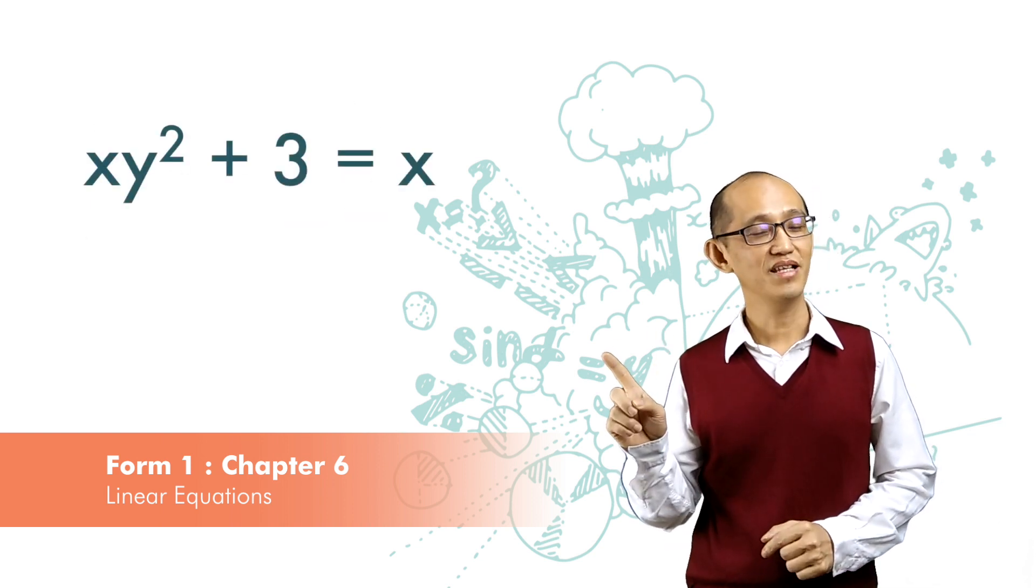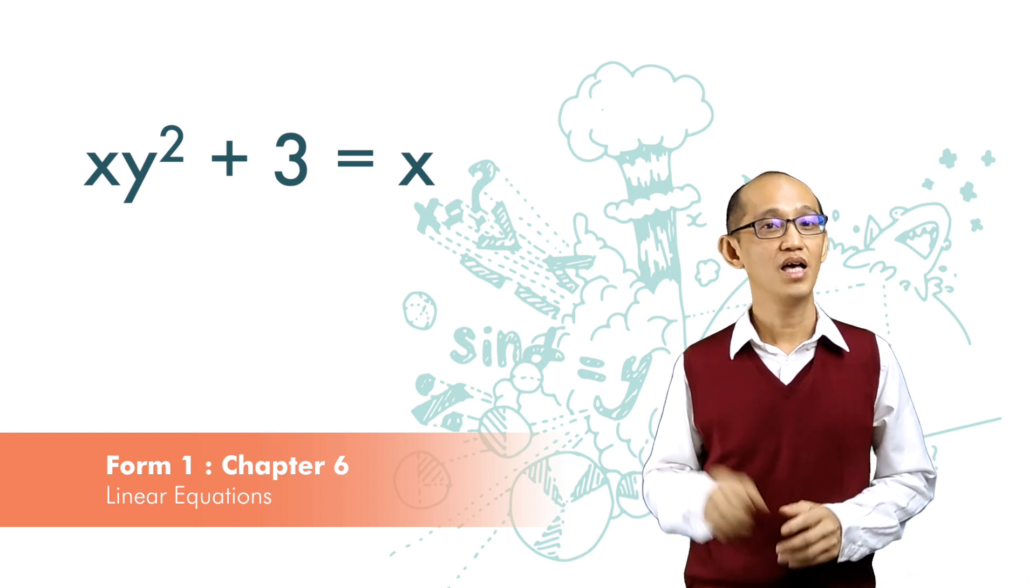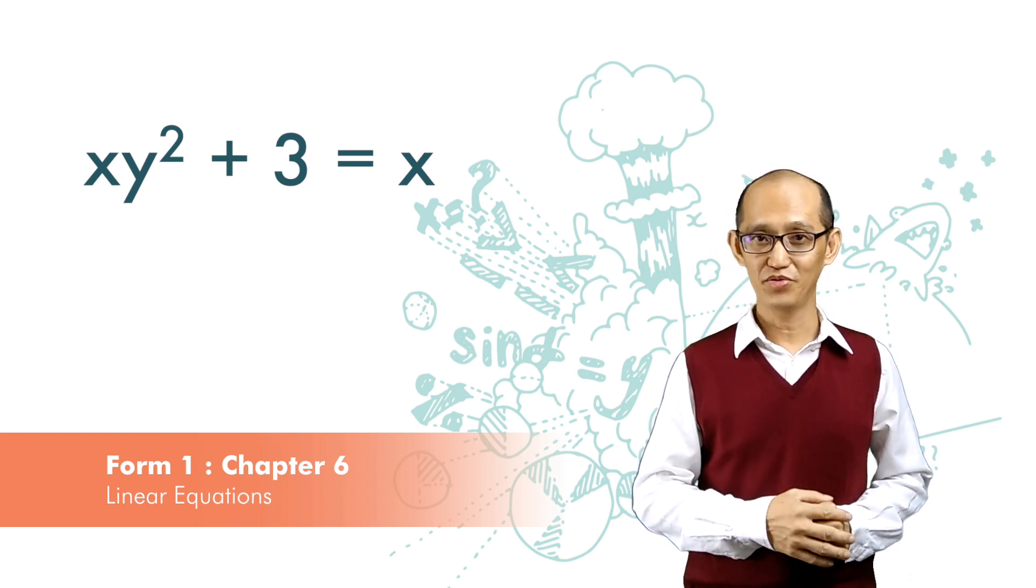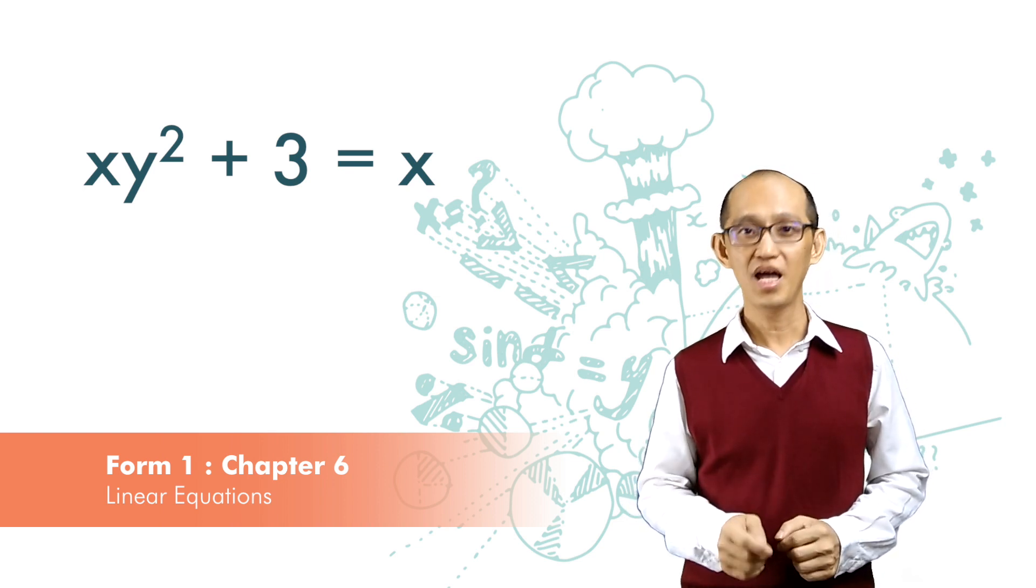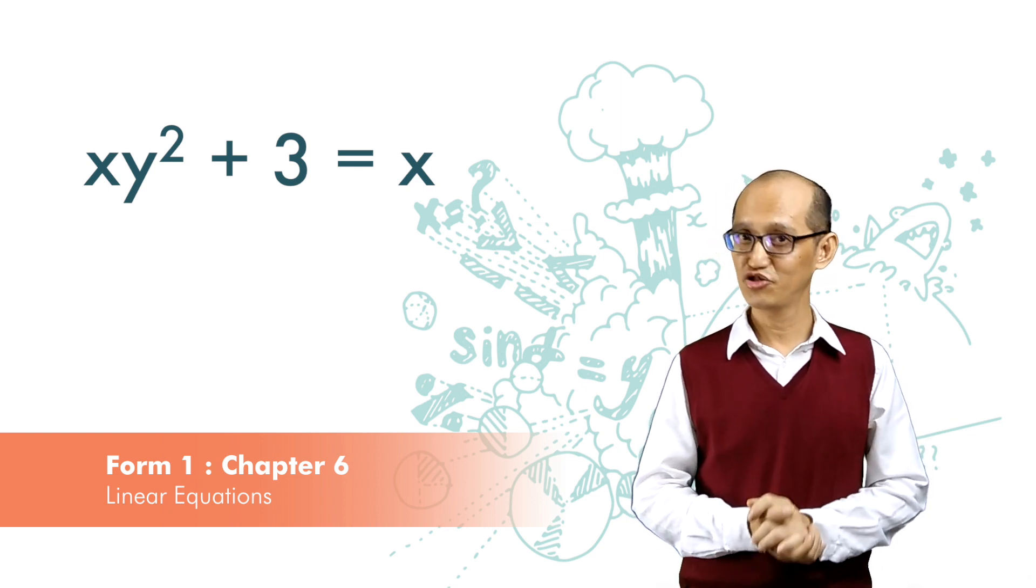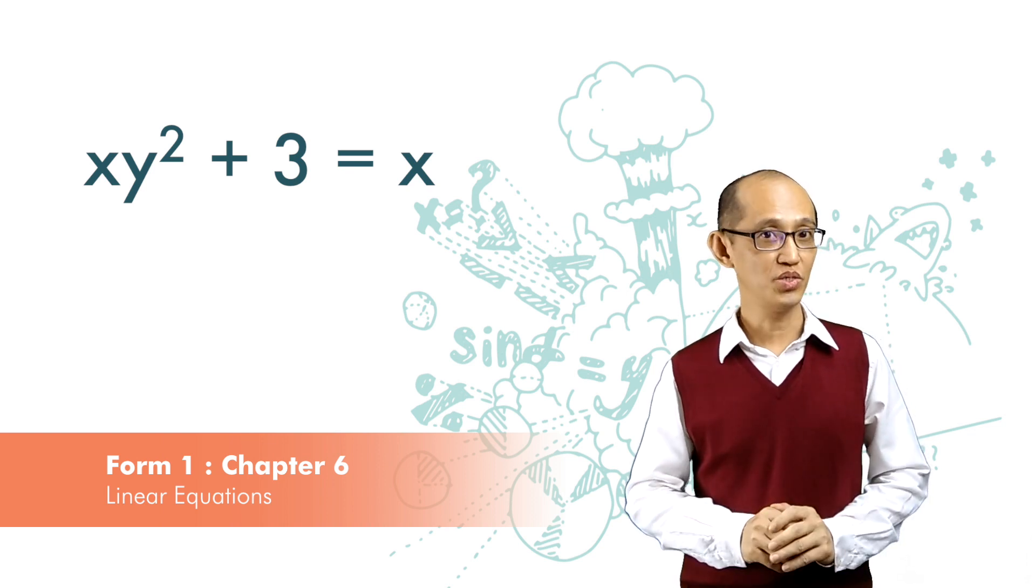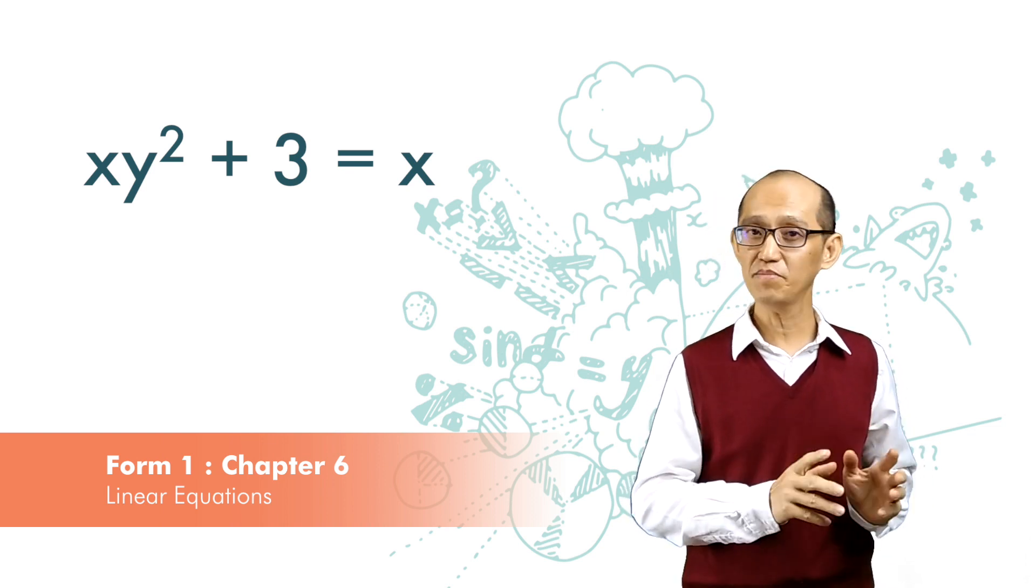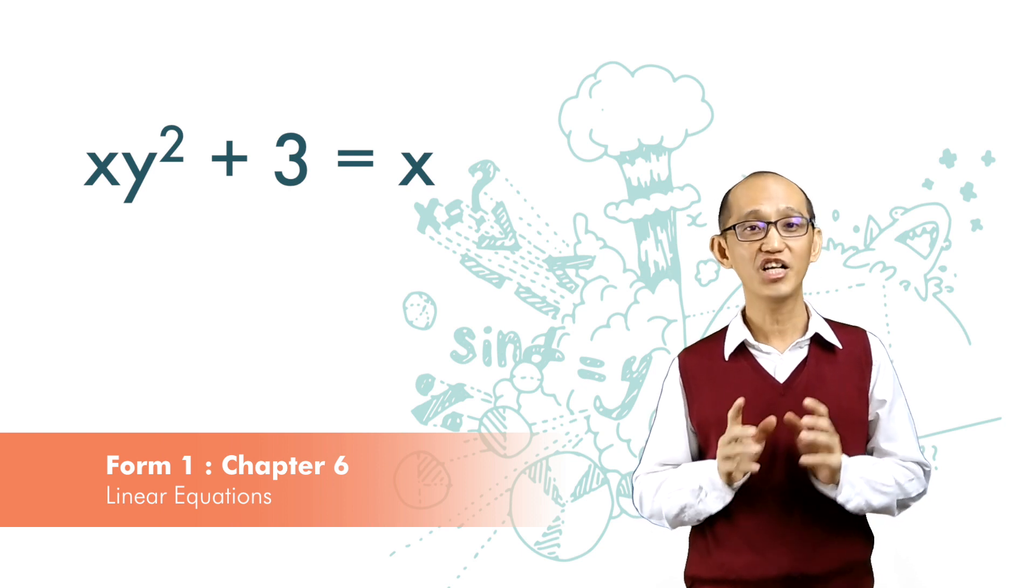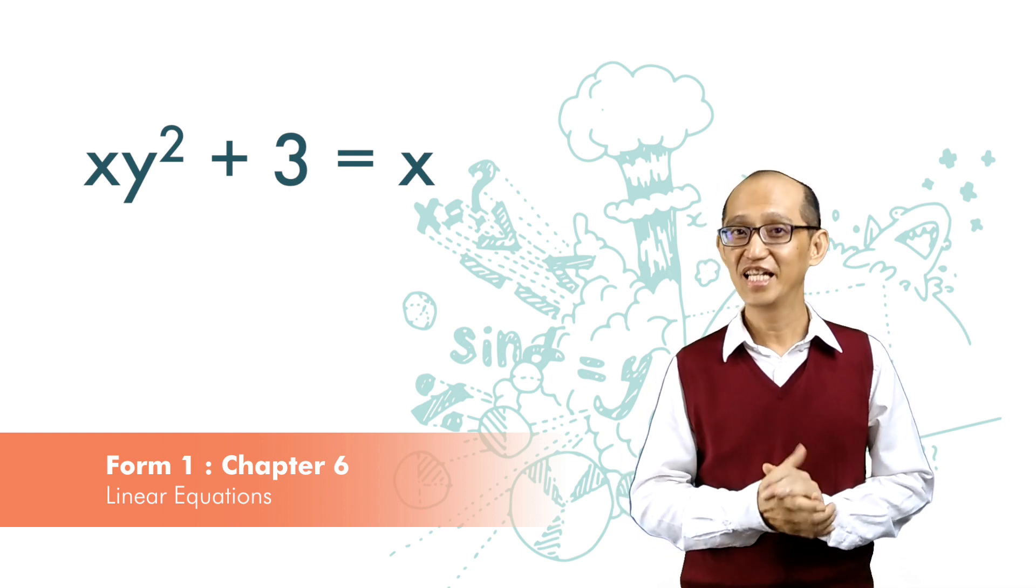But this one is not a linear equation in two variables. Although it has two variables, x and y, x times y is not a linear term. So in the equation where the variables are multiplied or are cubed or squared, they are not linear equations.